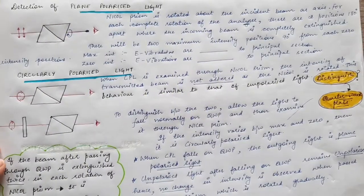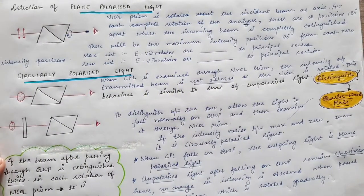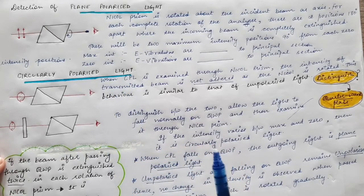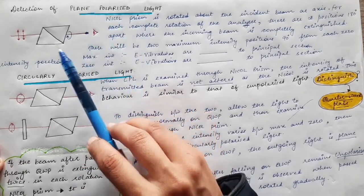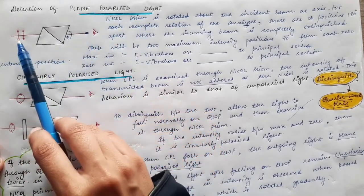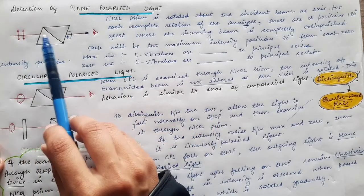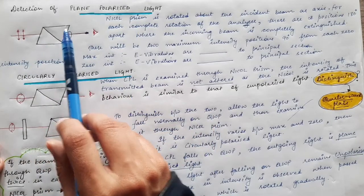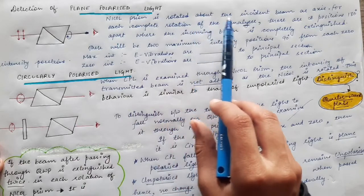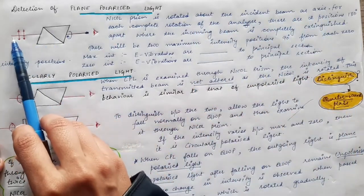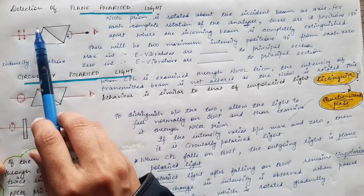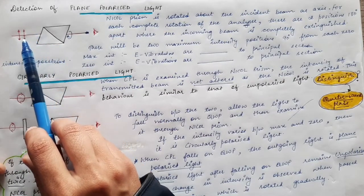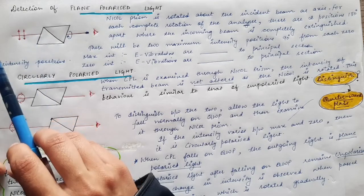We are going to see how to detect plane polarized light, then circularly polarized light, and lastly elliptically polarized light. For plane polarized light, we use a Nicol prism. To detect if a light is plane polarized, we use a Nicol prism and make the incident light fall on it. The light is plane polarized, but we need to prove that it is plane polarized light.